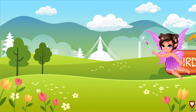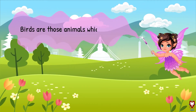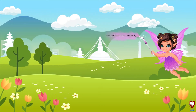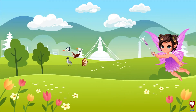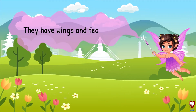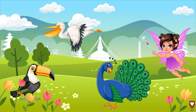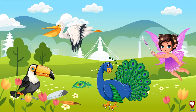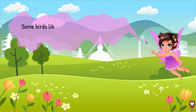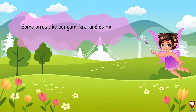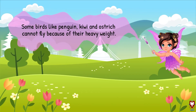Now another type is birds. Birds are those animals which can fly. They have wings and feathers. Some birds like penguin, kiwi, and ostrich cannot fly because of their heavy weight.